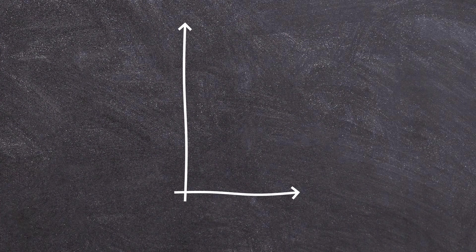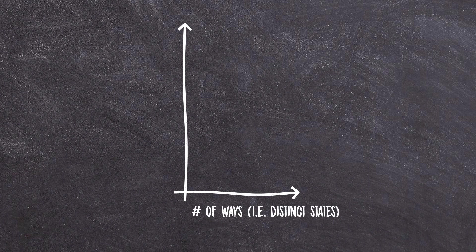What a density of states graph shows is basically in how many distinct ways a particle can end up having a certain energy. For example,